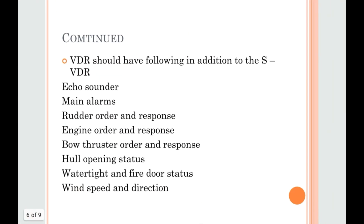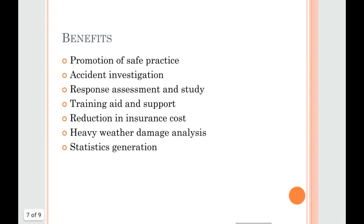VDR should have the following in addition to the SVDR: echo sounder, main alarms, rudder order and response, engine order and response, bow thruster order and response, hull opening status, watertight and fire door status, and wind speed and direction.